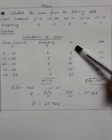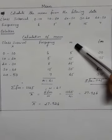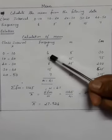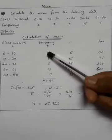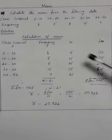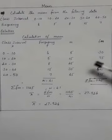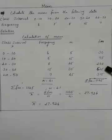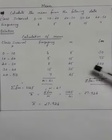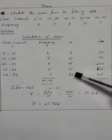FM equals F into M, frequency into midpoint. First group: 6 into 5 equals 30. 5 into 15 equals 75. 8 into 25 equals 200. 15 into 35 equals 525. 7 into 45 equals 315.